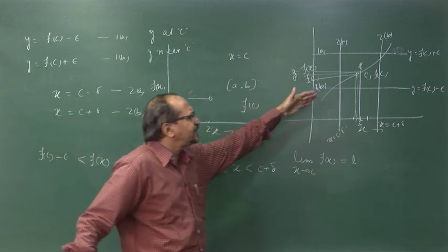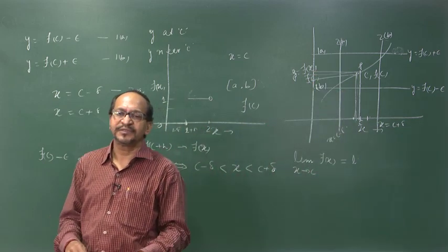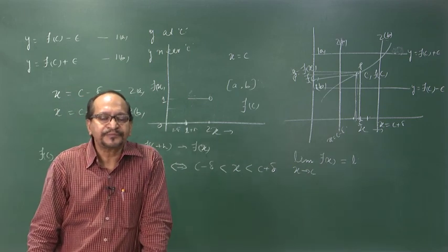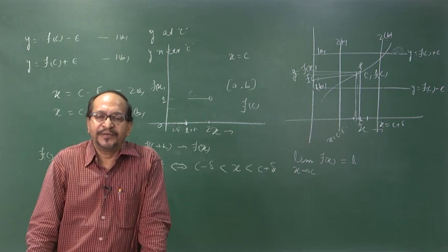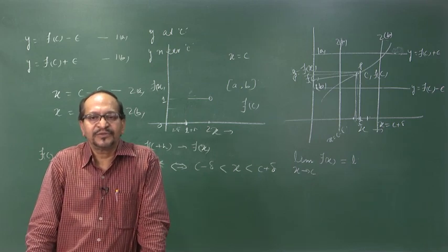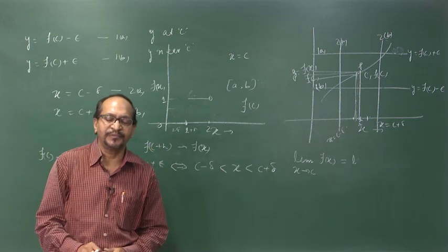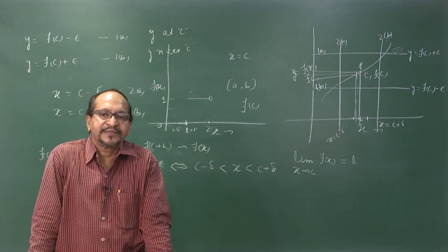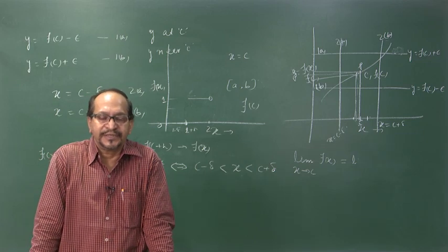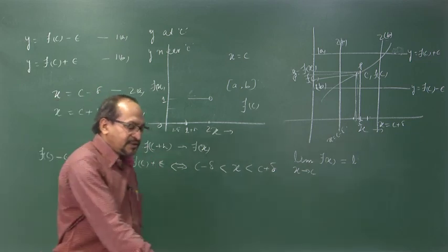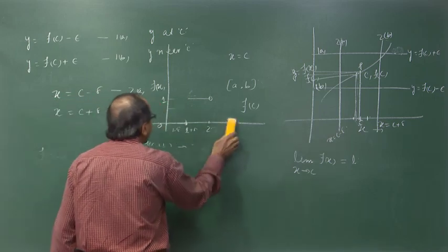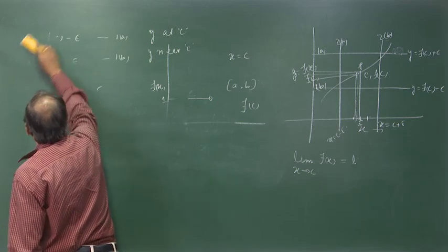A function is continuous if for any arbitrary positive number epsilon, there exists a positive number delta such that the modulus of f(x) minus f(c) is less than epsilon whenever x lies between c minus delta and c plus delta. This is the continuity condition, and we have also introduced the idea of the limiting value of a function.